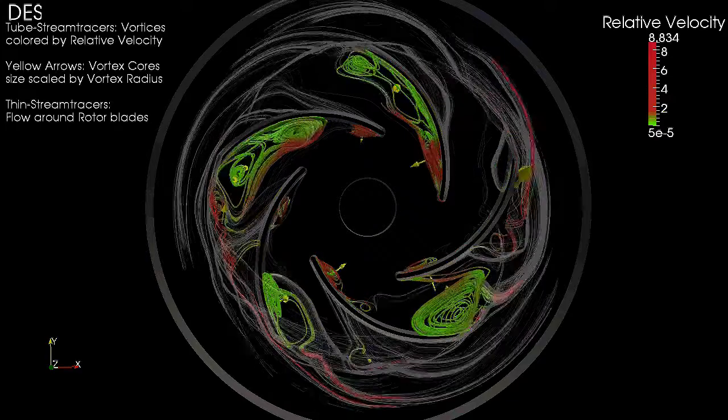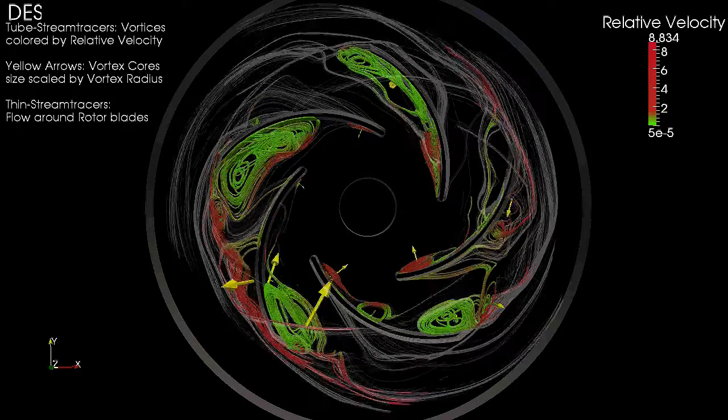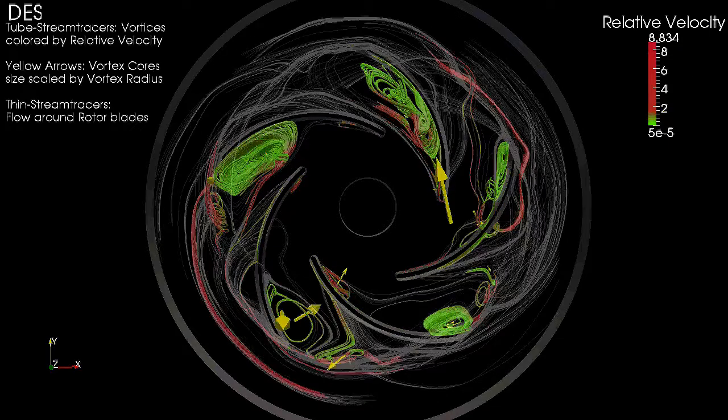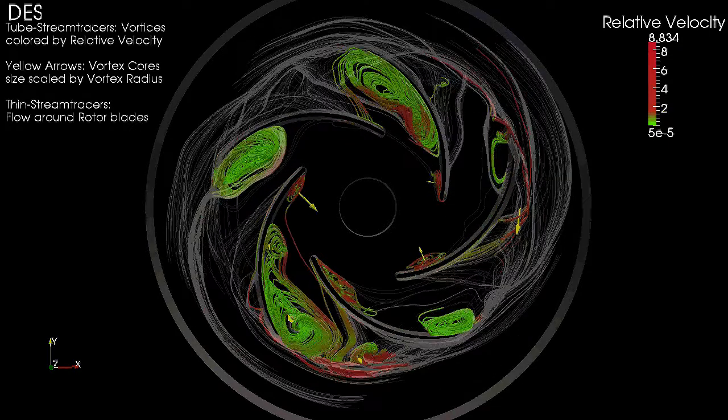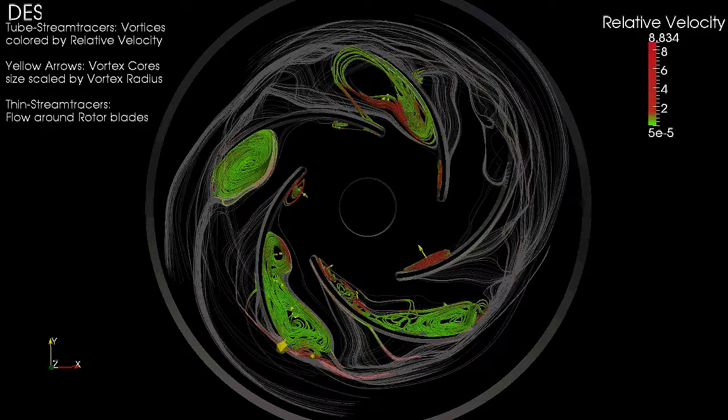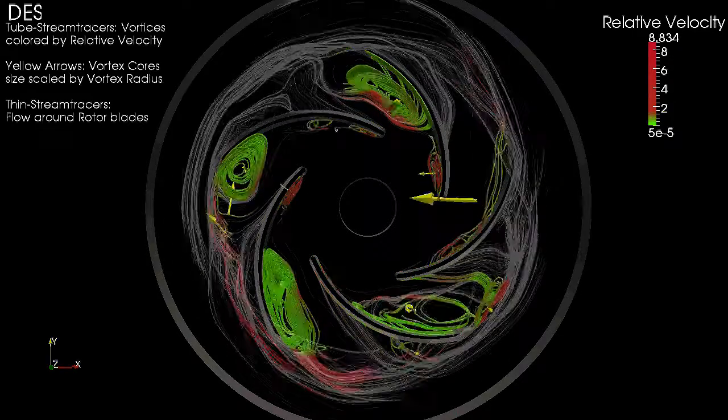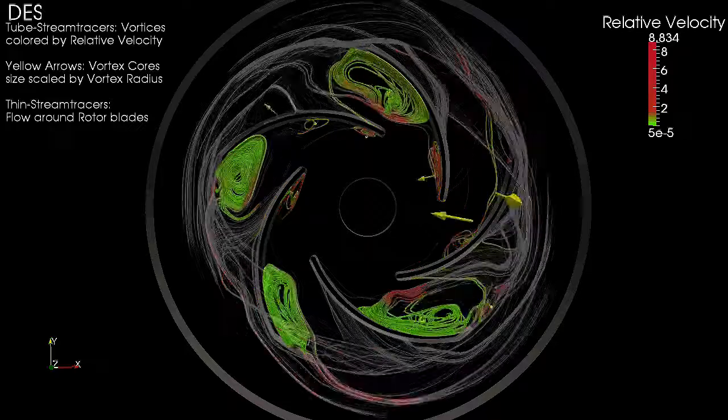In this video, vortices are shown as tubes of streamlines colored by relative velocity magnitude from bright green for regions with low velocity to red for regions with high velocity. A slight luminance variation between the red and green was included to account for colorblindness.